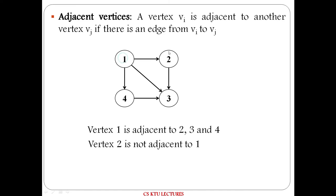Next is adjacent vertex. Vertex 1 is adjacent to 2, and 2 is adjacent to 3. In general, vertex VI is adjacent to another vertex VJ if there is an edge from VI to VJ.